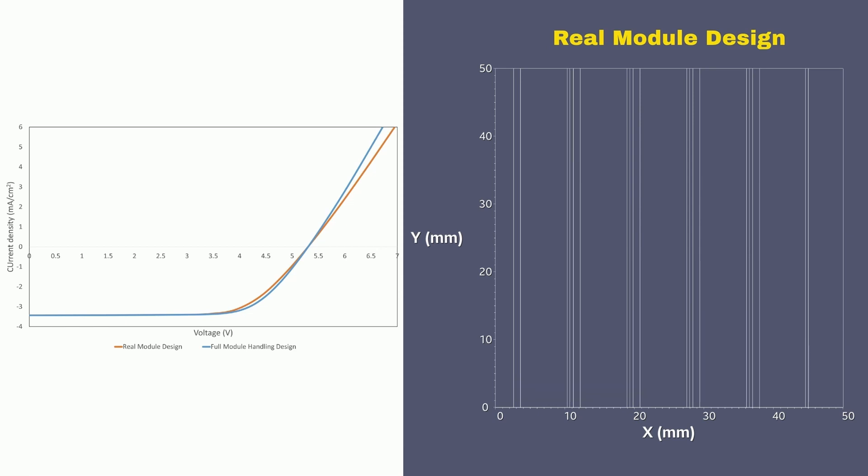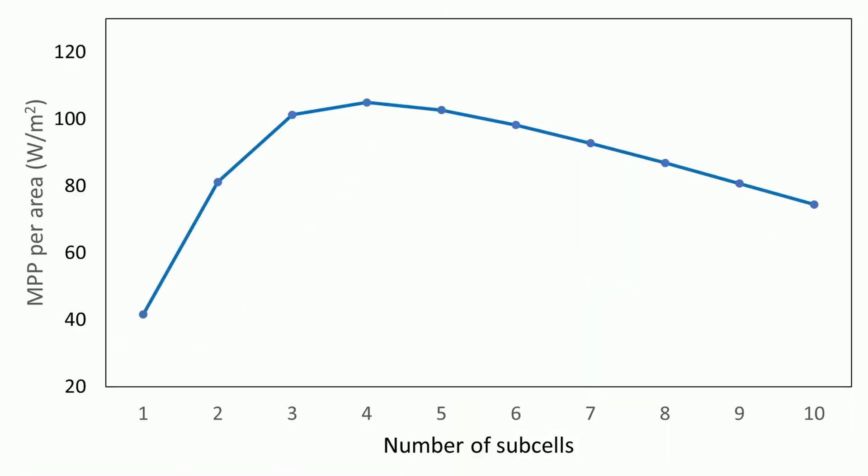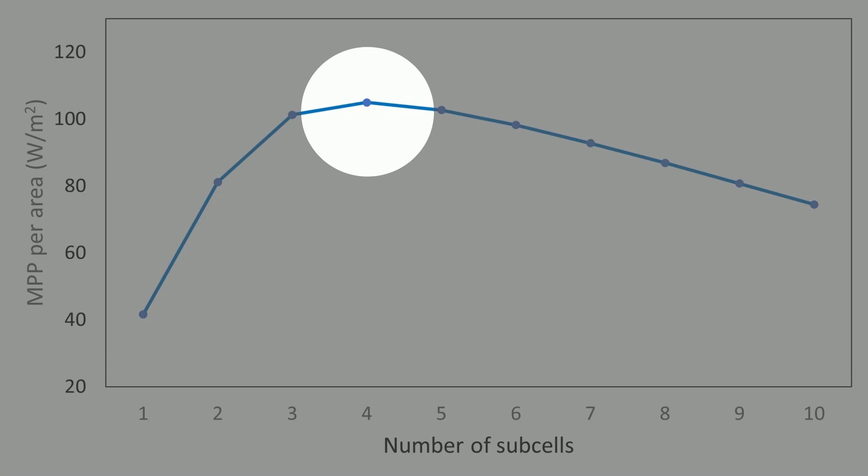Now that we have assessed the precision of the full module handling, we can analyze the progress further with the scale-up prediction. Considering the experimental JV curve we used as input, the maximum power output is obtained with 4 sub-cells.